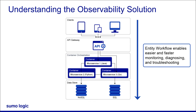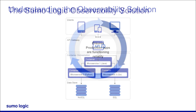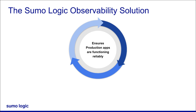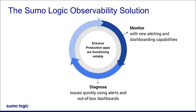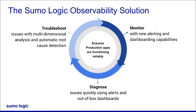These workflows also enable easier and faster monitoring, diagnosing, and troubleshooting. The solution offers features and capabilities that support the monitor, diagnose, and troubleshoot stages we talked about earlier. While monitoring tells you when something is wrong, observability allows you to understand why. With observability, you can monitor your systems effectively with new and improved alerting and dashboarding capabilities. The solution includes rich, pre-built content that you can leverage to quickly start observing your applications. With the Sumo Logic observability solution, you can diagnose issues quickly by leveraging alerts, out-of-the-box dashboards, multi-dimensional analysis, benchmarks, and automatic root cause detection.